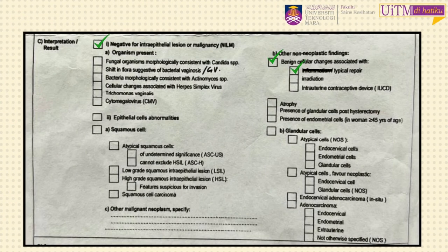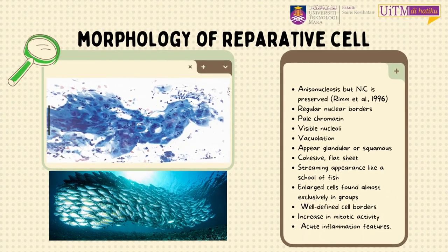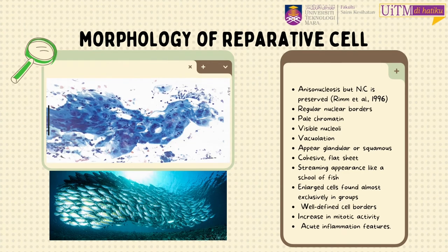This is how we report reparative cells in cervical cell reporting. The prominent features of reparative changes are anisonucleosis, where some nucleus sizes are normal and some are enlarged but not more than two times. The nuclei are visible and chromatin is pale. In the reparative state, squamous cells appear as cohesive, maintaining polarity between neighboring cells, giving a streaming appearance like a school of fish or a pool-like structure.